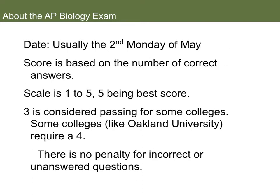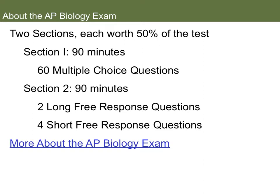Our AP Biology test is usually the second Monday in May. They score you based on a scale of 1 to 5, with 5 being the best score. 3 is considered passing for most colleges, but some colleges, like Oakland, require a 4. There's no penalty for incorrect or unanswered questions. For AP Bio, there are two sections. Each is worth 50% of your overall test score. Section 1 is an hour and a half with 60 multiple-choice questions, A through D, four choices. Section 2 is also an hour and a half, where you'll have two longer free response questions and four shorter free response questions.